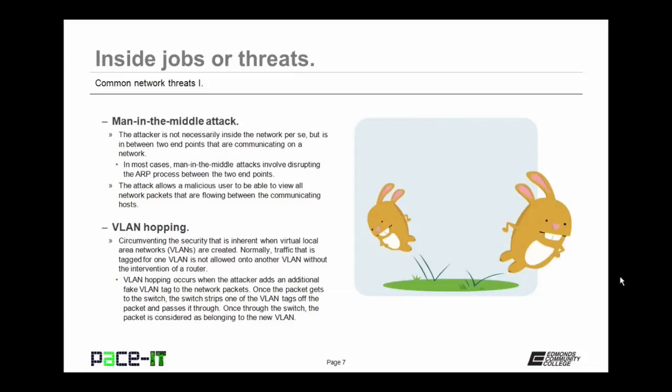Then there's VLAN hopping — circumventing the security inherent when virtual local area networks are created. Normally, traffic tagged for one VLAN is not allowed onto another VLAN without the intervention of a router. VLAN hopping occurs when the attacker adds an additional fake VLAN tag to the network packets. Once the packets get to the switch, the switch strips one VLAN tag off and passes it through. Once through the switch, the packet is considered as belonging to the new VLAN, bypassing the inherent VLAN security.